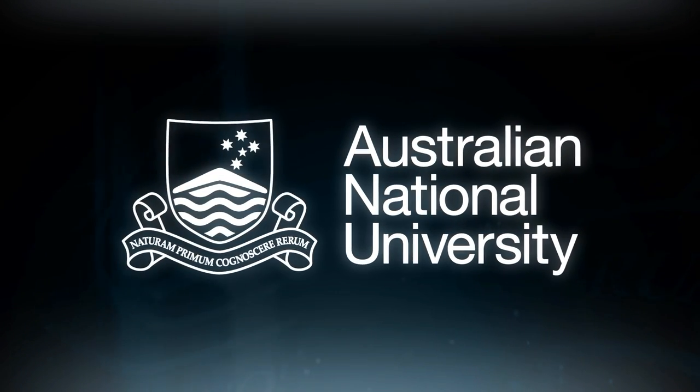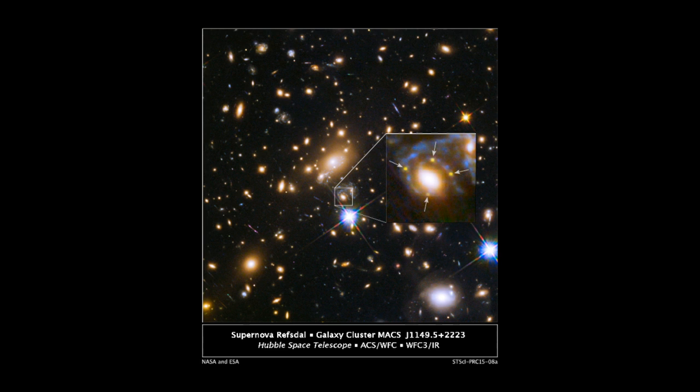What we found is the same star blowing up four different times. The way we've seen this is that a foreground galaxy, actually a massive cluster of galaxies, is acting like a magnifying lens creating four different images of the same exploding object.